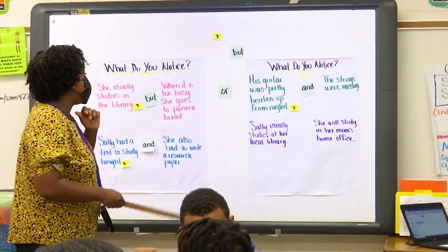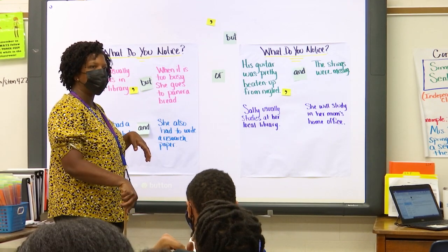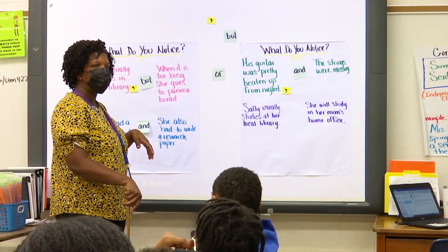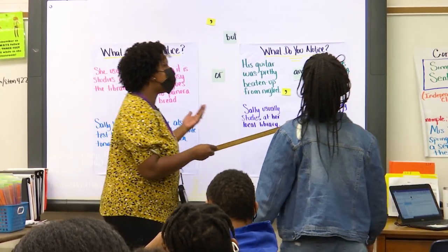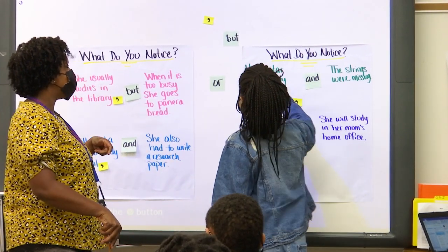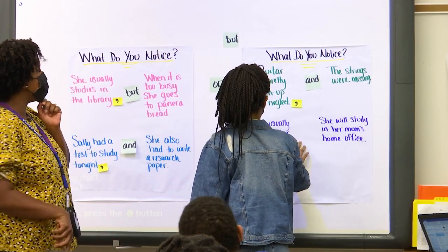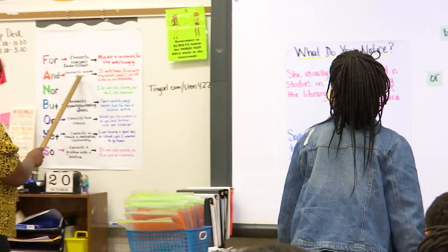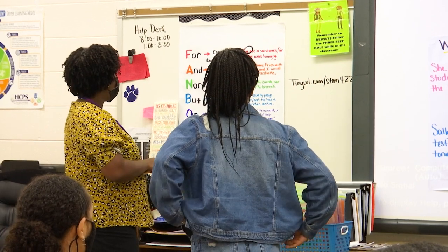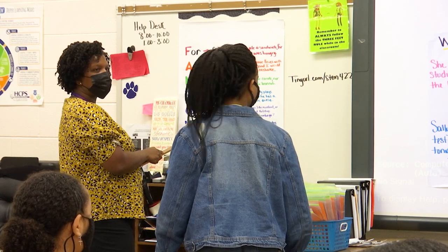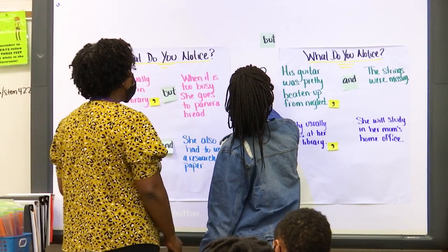Sally usually studies at her local library. She will study in her mom's office. So you want to look at the purpose again? 'And' connects similar ideas. 'But' connects things that are opposite or some type of contrast. And 'or' connects choices. Thank you so much.